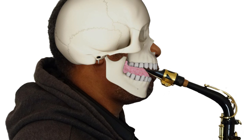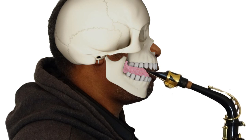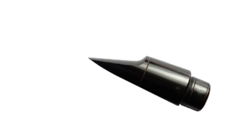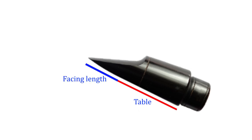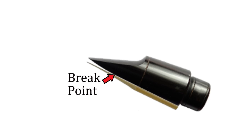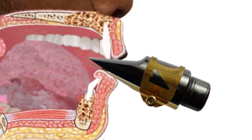Moving the lower jaw also changes the tonal quality of the note. This will also happen by moving the mouthpiece in and out slightly between the lips. The mouthpiece has a flat part called a table and a curved part called a facing. When the reed is placed on the mouthpiece there is a point where the reed moves away from the mouthpiece — this is the ideal place to position the lower teeth and lower lip to give maximum space for the reed to vibrate. However, for larger mouthpieces it may be more practical not to put your lower teeth and lower lip here, as there might be too much mouthpiece in your mouth. Usually we want the reed to vibrate freely in order to produce the necessary frequencies to create a rich, full tone.